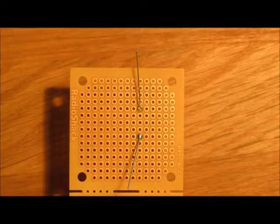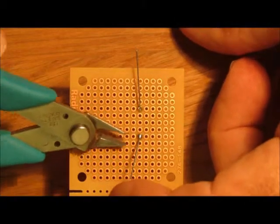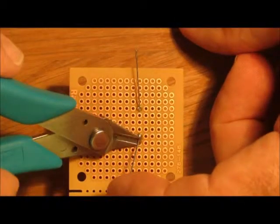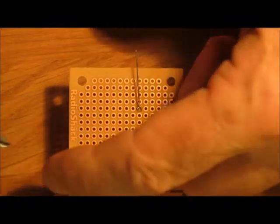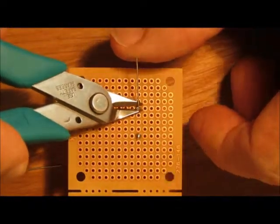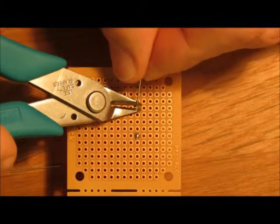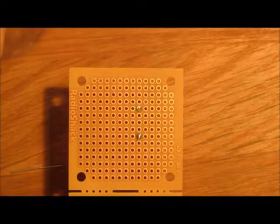To trim the leads, I use my diagonal cutters to cut each lead flush with the solder joint. Don't cut into the solder. When you cut the lead, it will go flying unless you hold it or put a finger on it. Closely examine the joints to make sure they are all good.